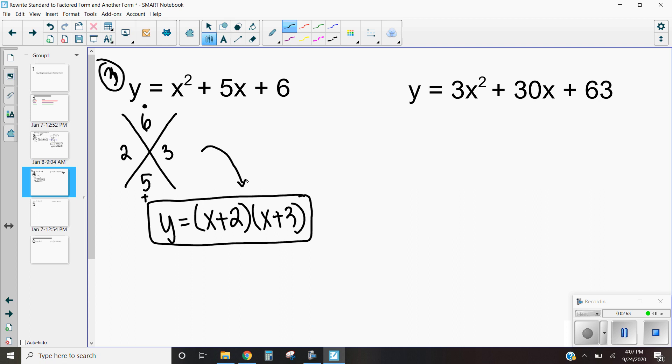Now the biggest thing you want to make sure is remember these are equations. So we have to have an equal sign and say that it equals y. If we only have our factored form here, if we didn't write that, that would not be an equation. That would just be a factored polynomial. And we are looking for rewriting the whole equation. So we want to include that y equals.